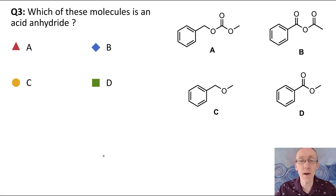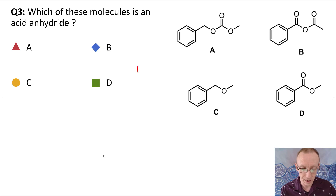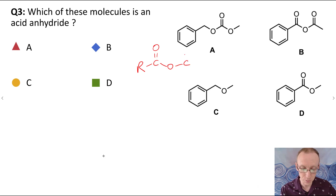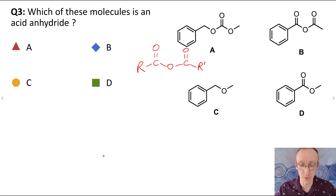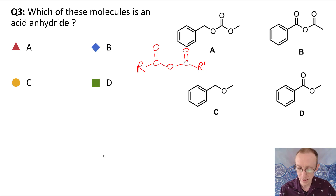Question three: which of these molecules is an acid anhydride? For an acid anhydride, we have an R group attached to a carbonyl group, attached to an oxygen that is then attached to another carbonyl group, and then another R group — which could be the same or different to the first R group. So we must have two acyl groups connected through one oxygen atom. The molecule that fits that is compound B.